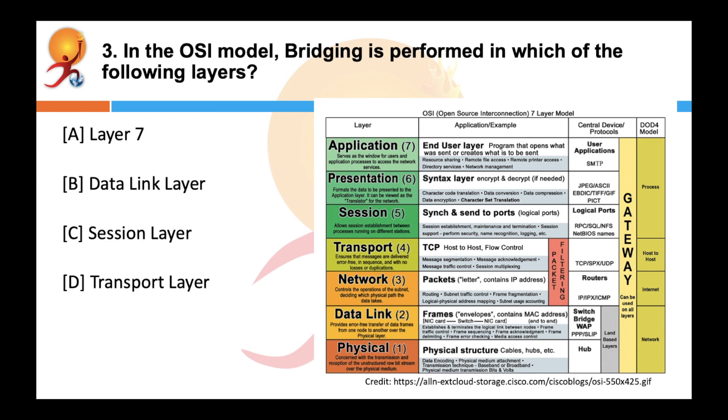In the OSI model, bridging is performed in which of the following layers? Correct answer is data link layer. In the OSI model, a network bridge is a computer networking device that creates a single aggregate network from multiple communication networks or network segments. You will find one of the images in our later questions.